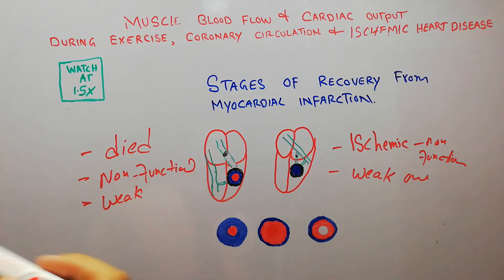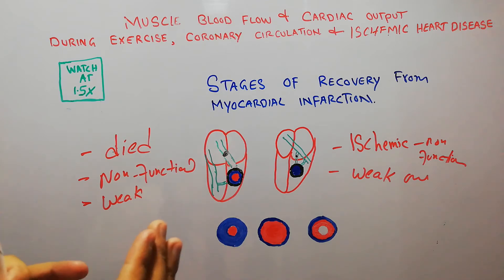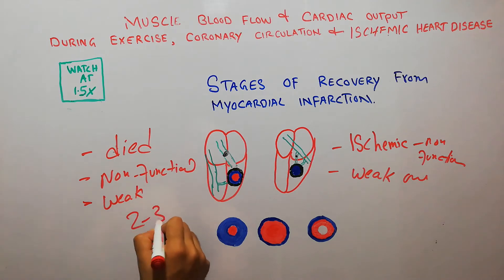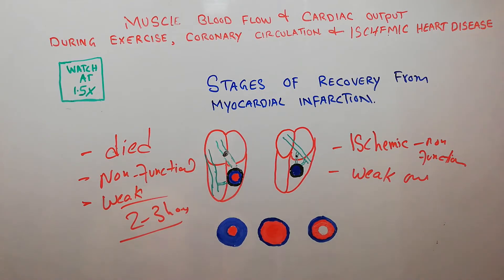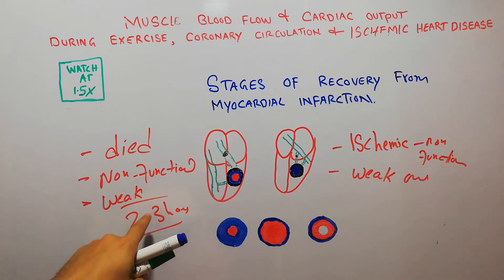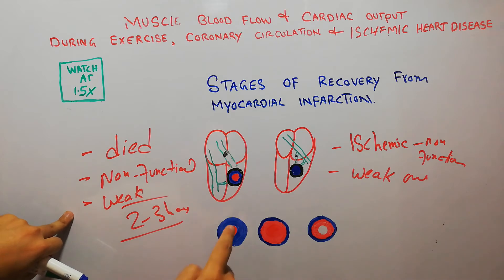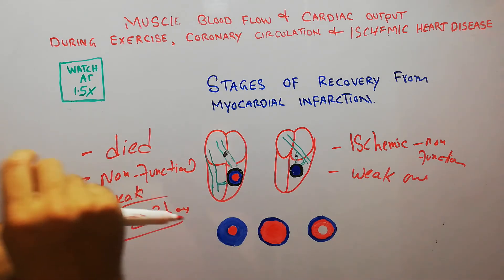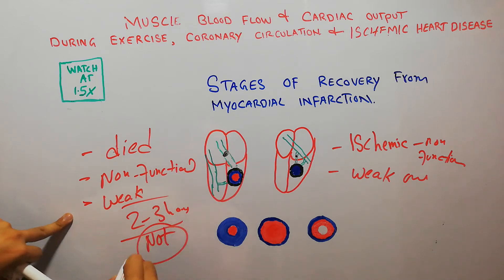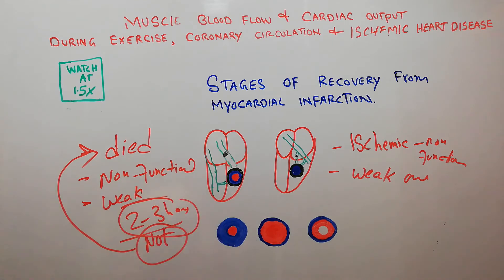Now, how does this area begin recovering? In the initial few hours after myocardial infarction or acute coronary occlusion has occurred, if blood flow is not restored after two to three hours, the muscle fibers at the center of a large infarct will have died. The surrounding area will be non-functional due to ischemia, and the central fibers — not receiving any blood — will have died within two to three hours of the acute attack.